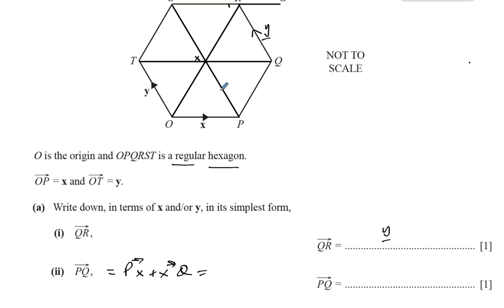Now P to X is the vector Y and X to Q is the vector X. So it's X plus Y or Y plus X as you wish. So it's X plus Y.